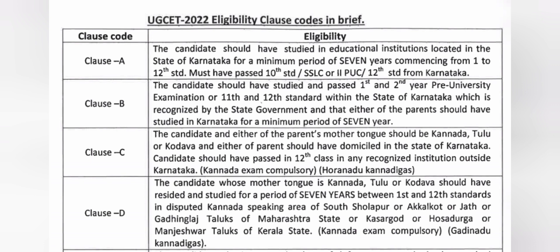Clause C and Clause D are specific categories. Clause C is for Horanadu Kannadigas where either parent's mother tongue is Kannada, Tulu, or Kodava, they are domicile of Karnataka, and the candidate passed Class 12. Clause D applies if your mother tongue is Kannada, Tulu, or Kodava and you studied seven years from Class 1 to 10 in Kannada-speaking disputed regions like Sholapur, Akkalakot, or Jat in Maharashtra — these are Gadinadu Kannadigas. For both Clause C and D, a Kannada exam is compulsory.